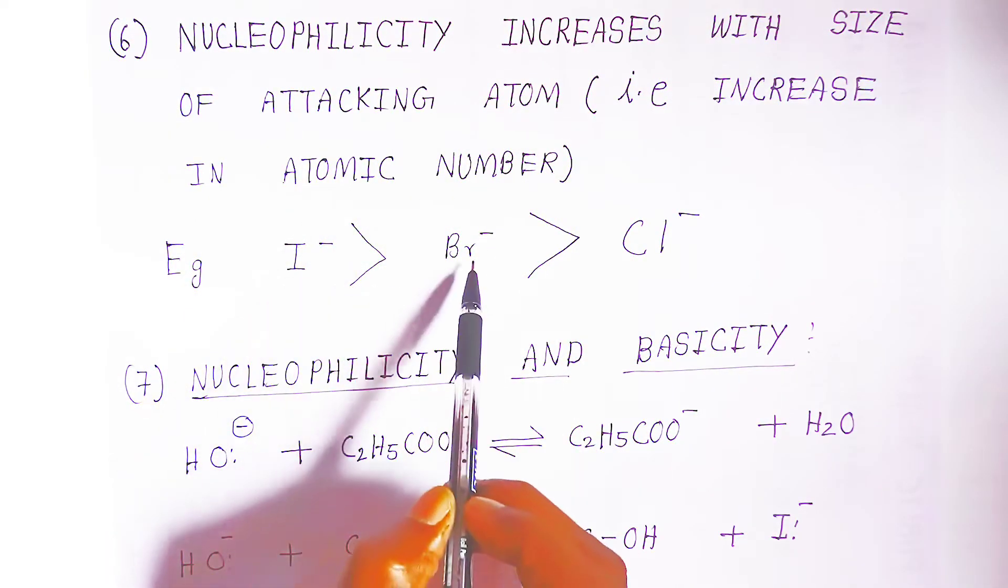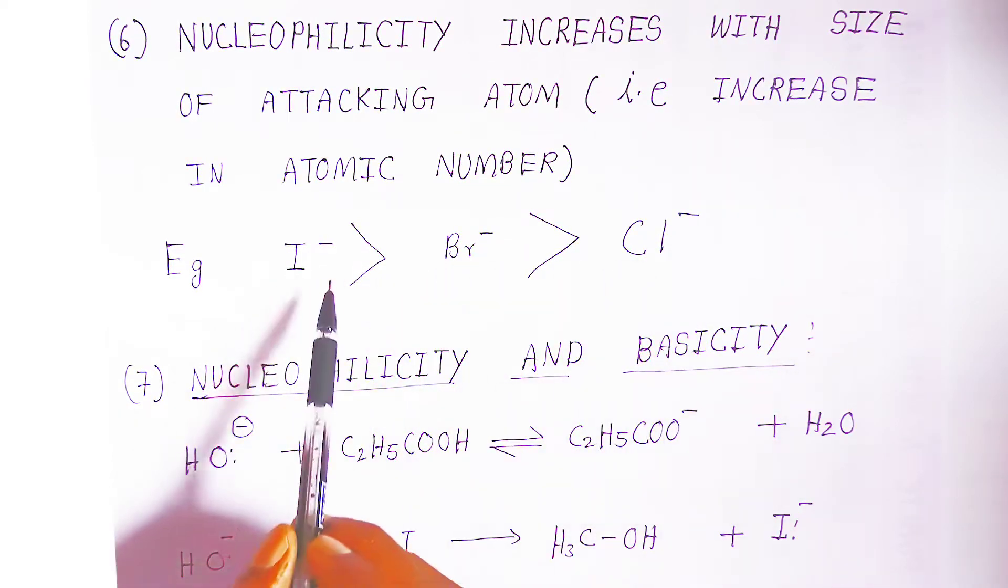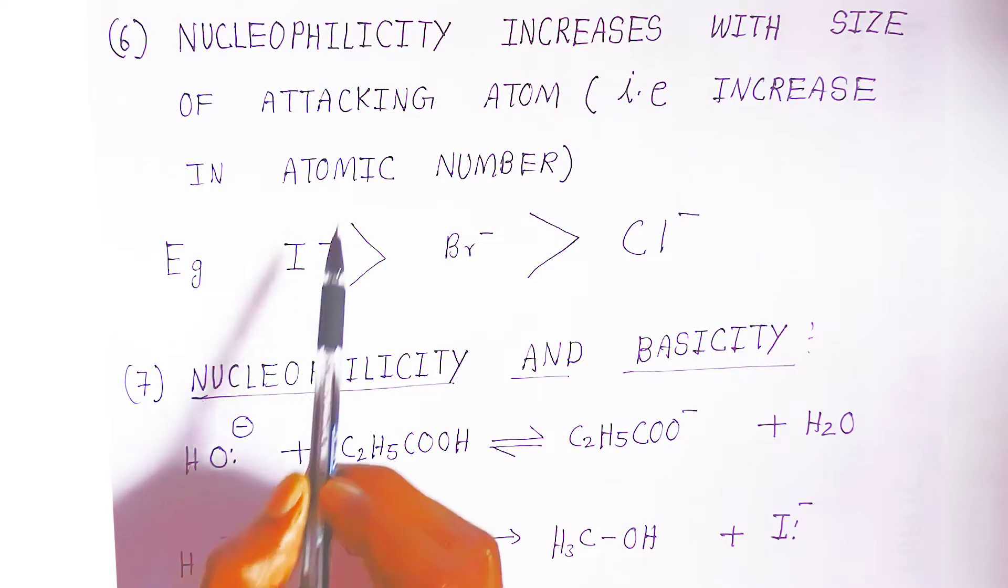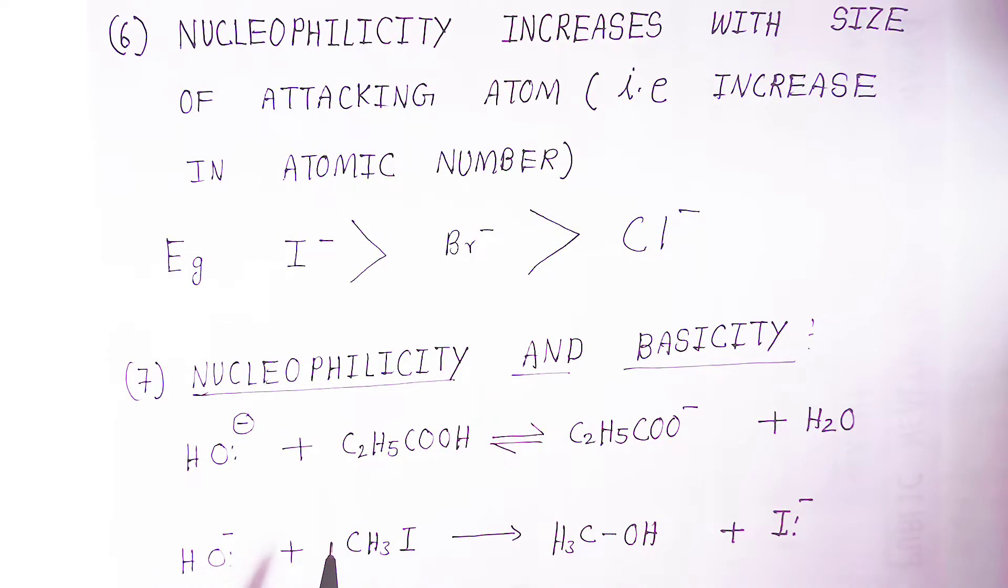So iodine, bromine, and chloride - iodide will have more nucleophilic character than chlorine. Now, nucleophilicity and basicity - what is the difference students?